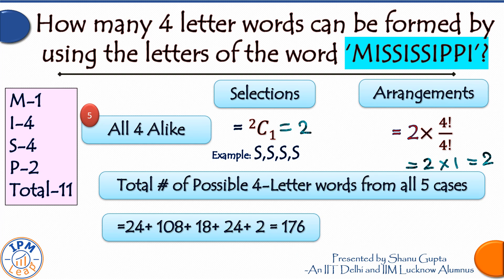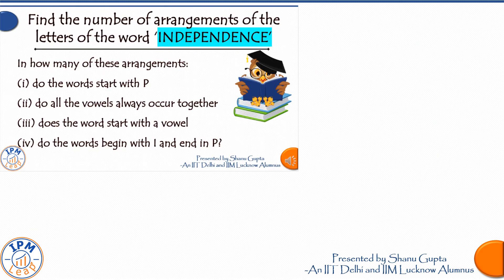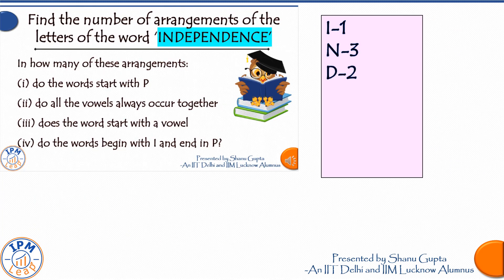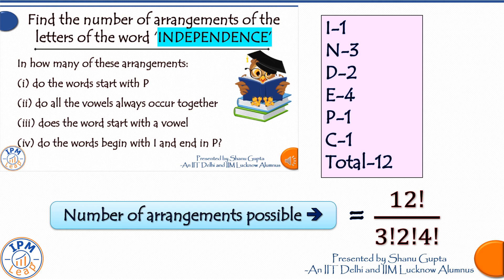Now sharing notes for the example word Independence so you may try on your own. We repeat the exercise of counting letters: there are 12 letters. N appears three times, D appears twice, E appears four times. Applying the formula, the number of arrangements = 12! / (3! × 2! × 4!).